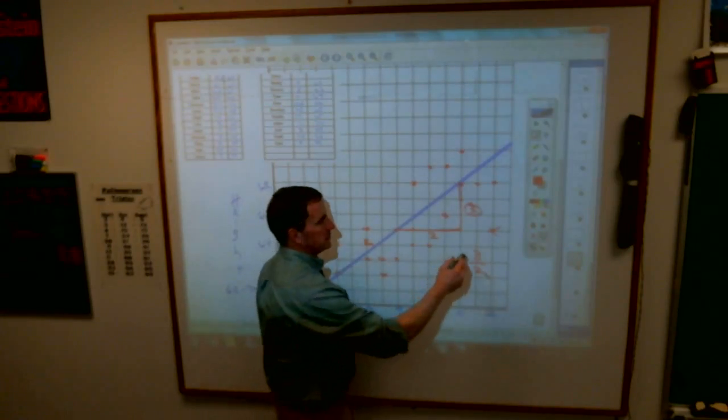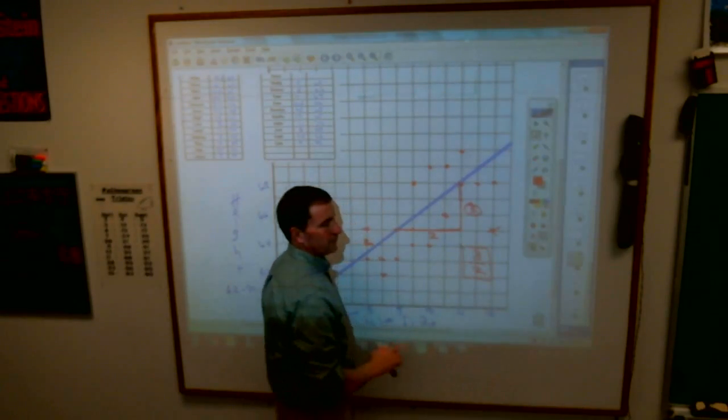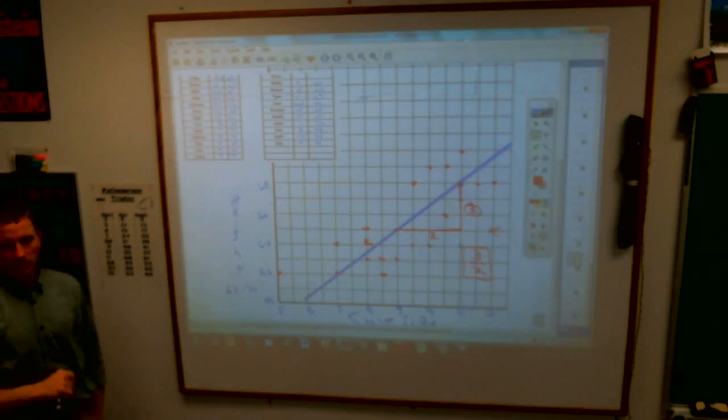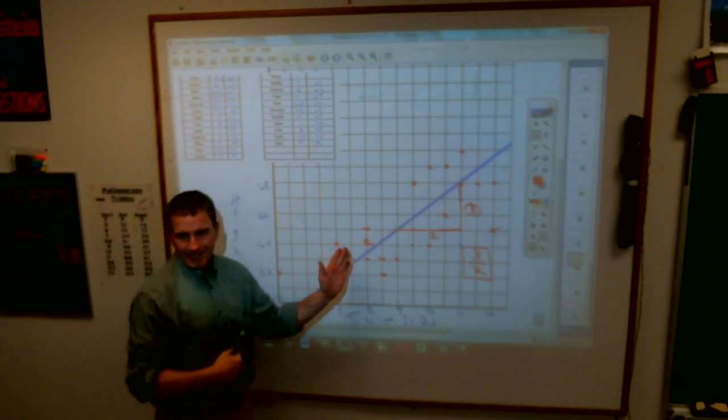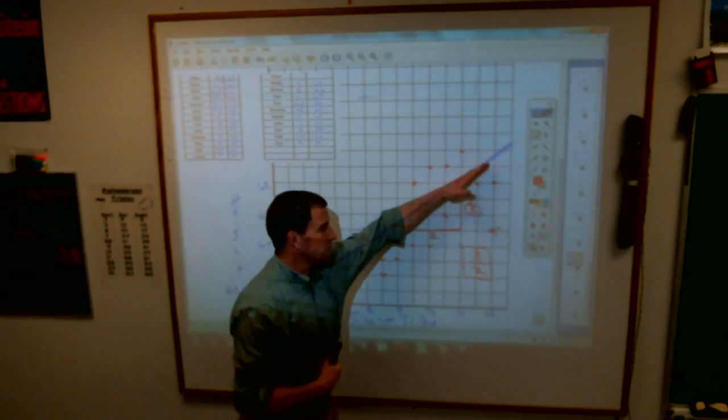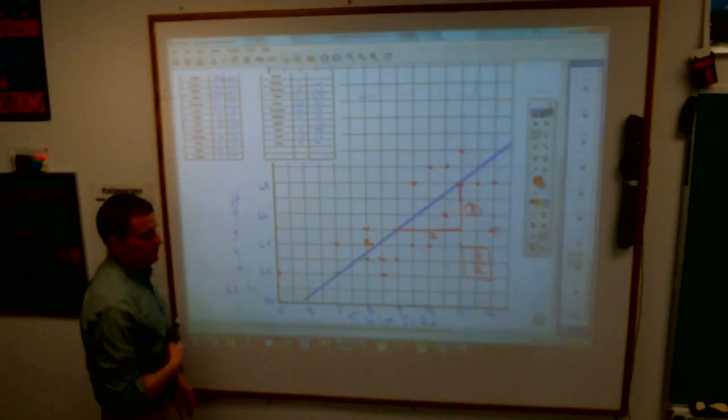You can make the assumption then that for every shoe size you go up, the person is three and a half inches taller. And again, this is not exact science. This is just so that you have a trend line so you can kind of get just about a gist.